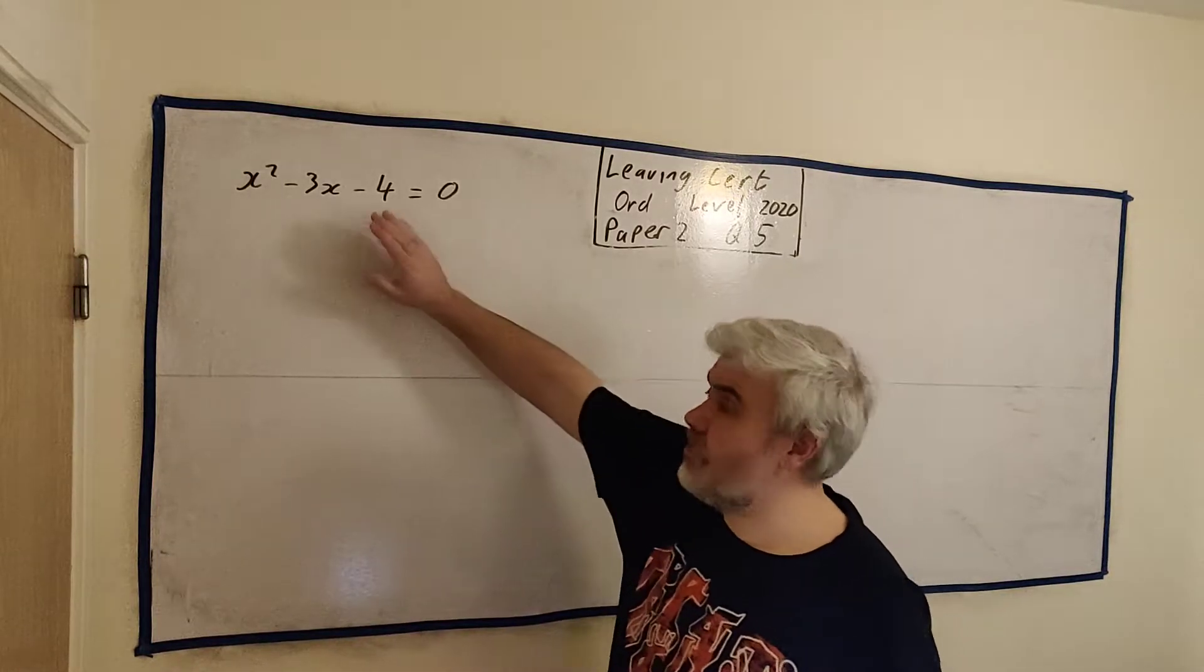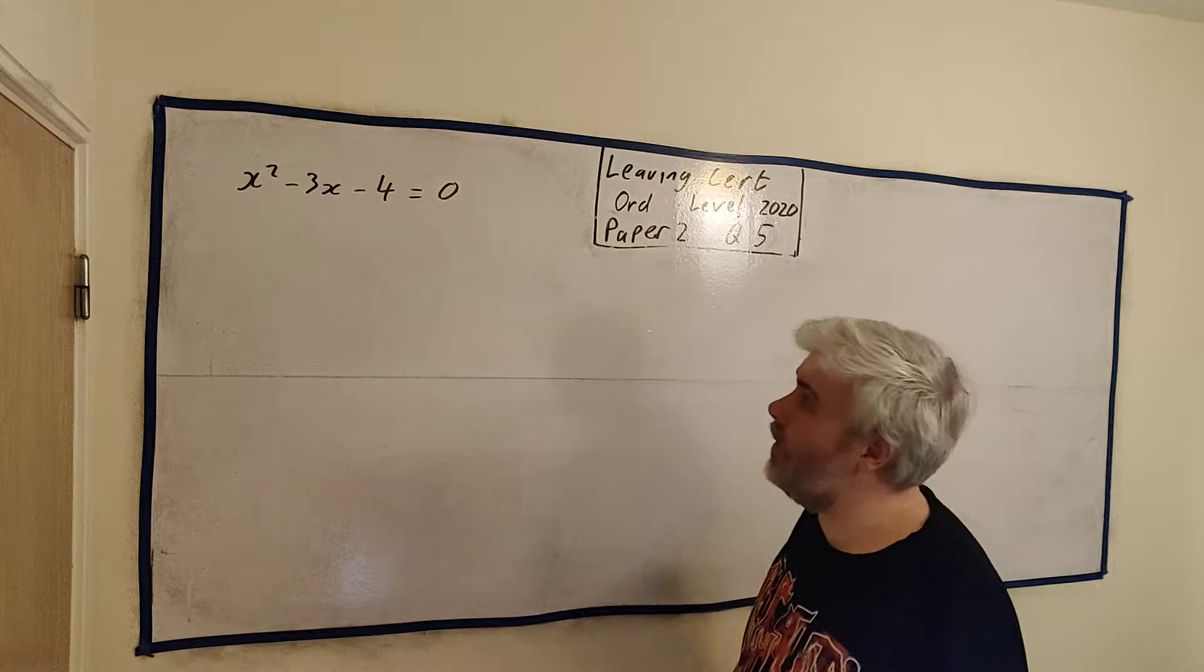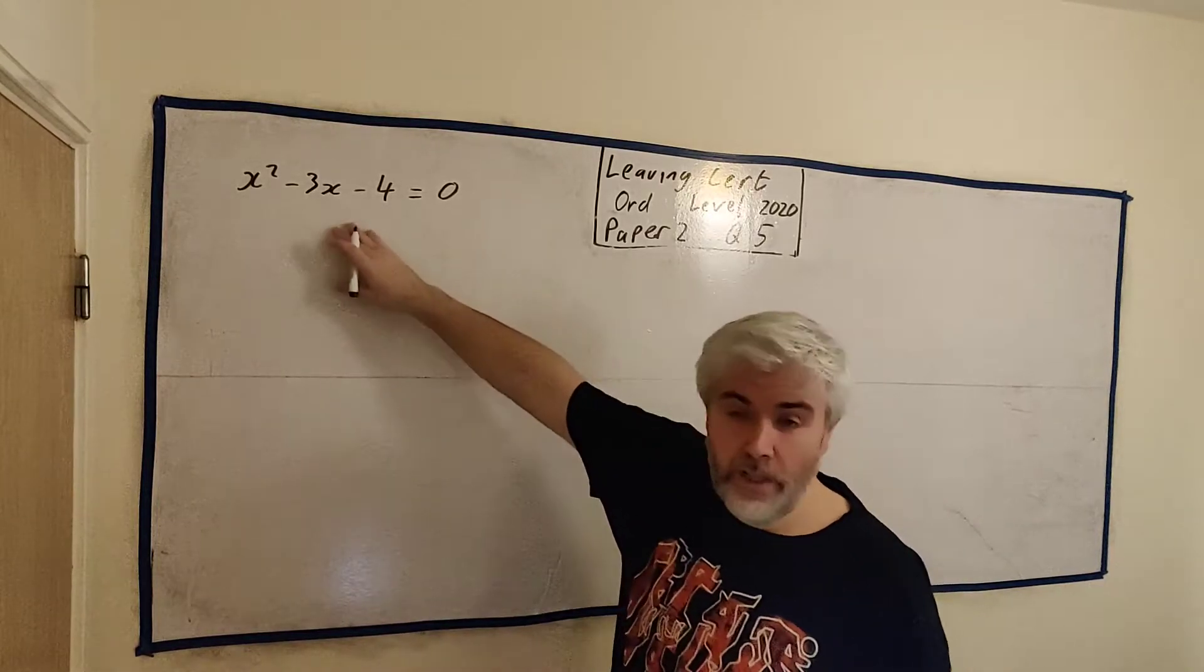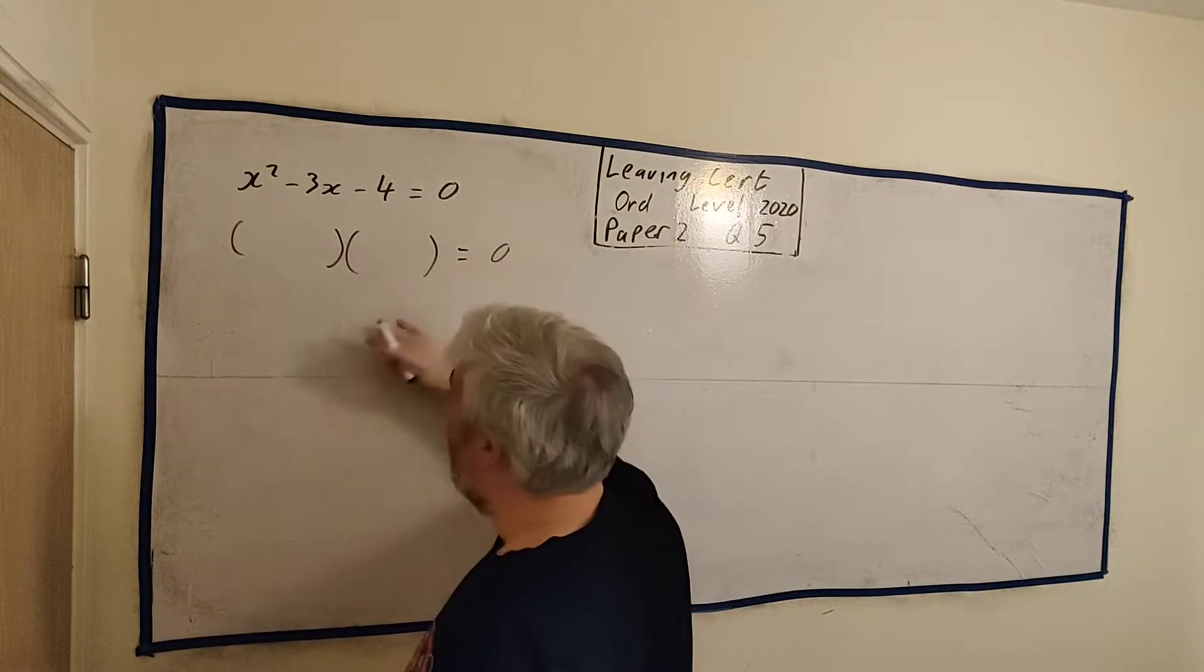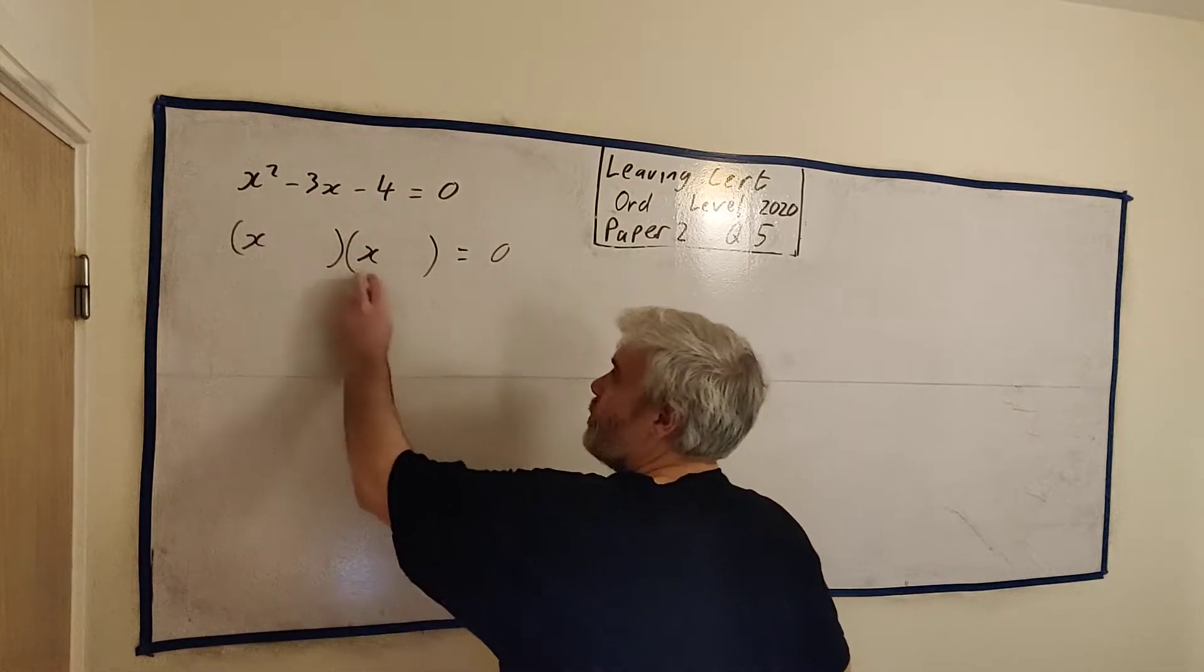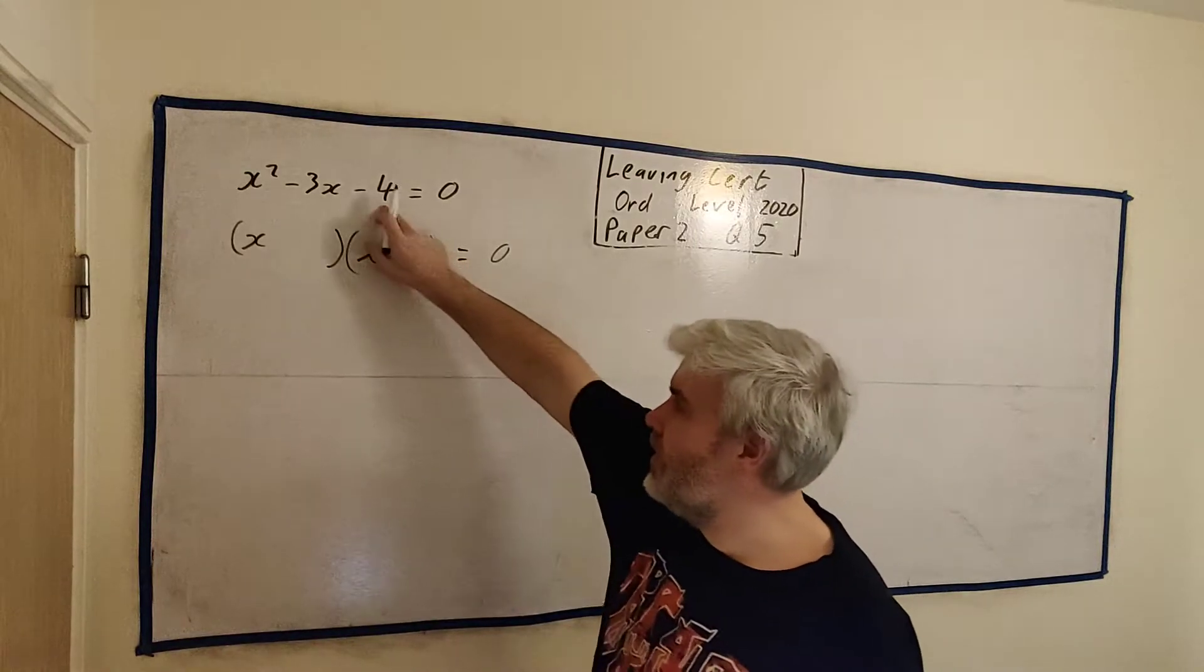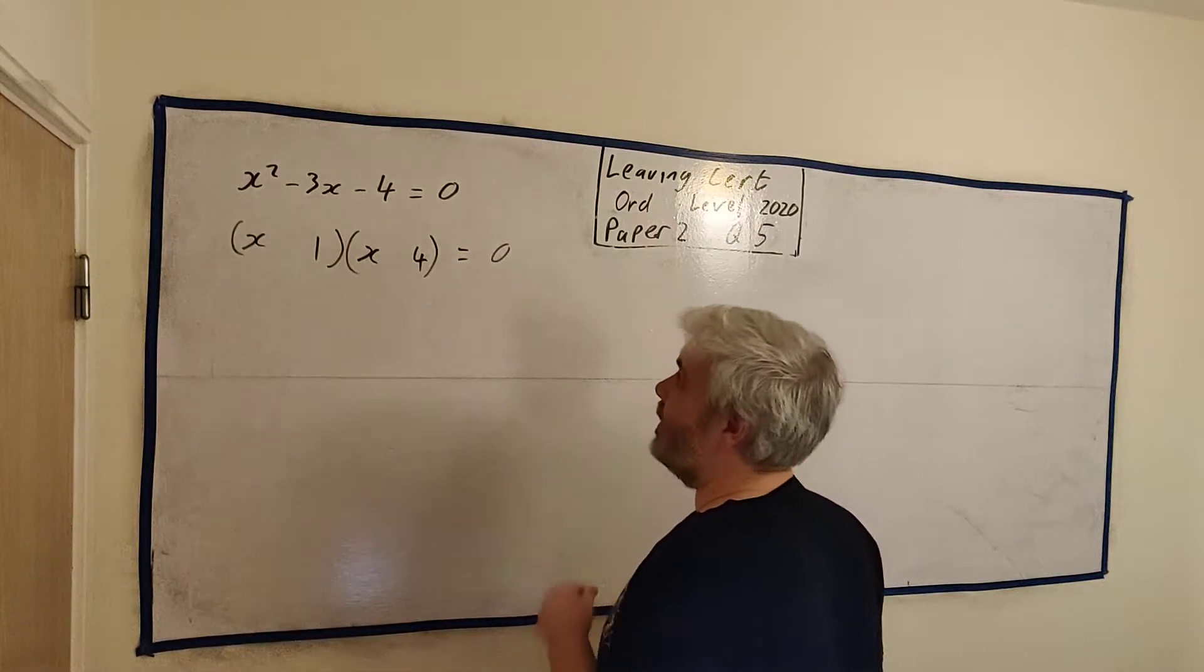Part A simply wants us to solve this equation: x squared minus 3x minus 4 equals 0. Now there's two ways to do this. I'll show you the first way and then I'll quickly sketch out the second way. It's a quadratic equation where you factorize it. So we open up two brackets that will multiply to get this. They're going to have an x and an x because x times x will get x squared. Now we need two numbers to multiply to get minus 4 and add or take away to get minus 3. That's going to be 4 and 1.